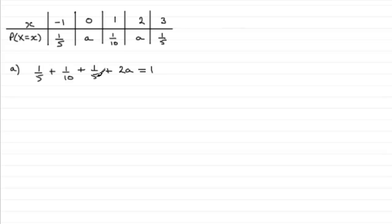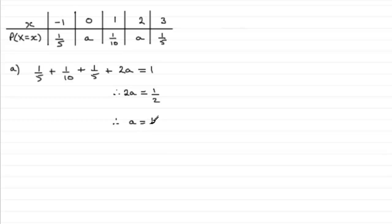Taking away a half from both sides, you end up with 2a equals 1 minus a half, which is a half. So if you divide both sides by 2, you get a equals a quarter, or 0.25. Okay, so that's part A.